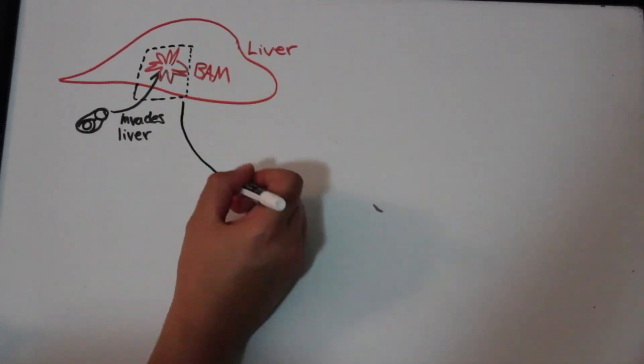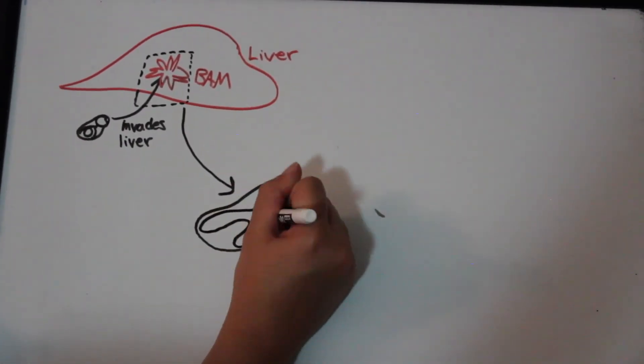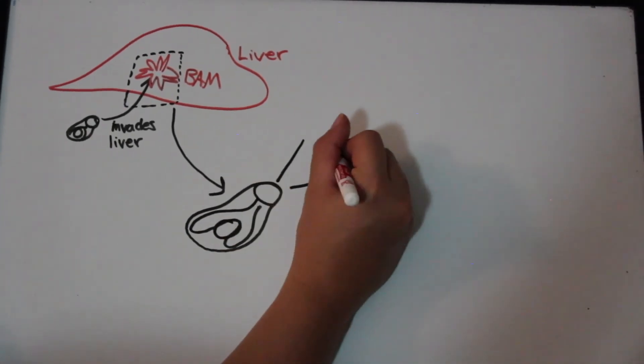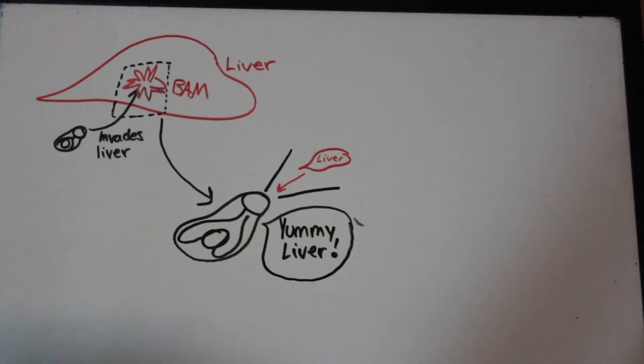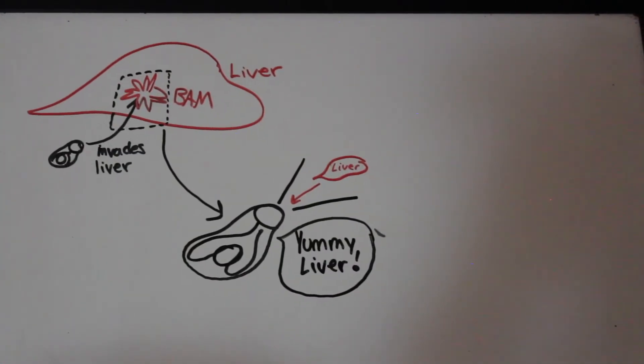At the liver, the immature fluke penetrates the capsule and moves through the parenchyma, feeding and growing. The immature liver fluke stays in the liver parenchyma for 6-7 weeks.